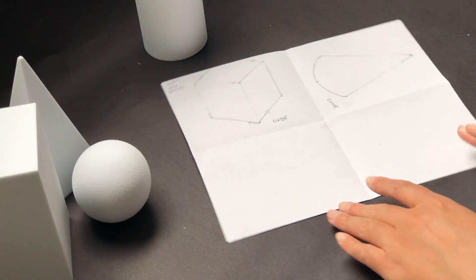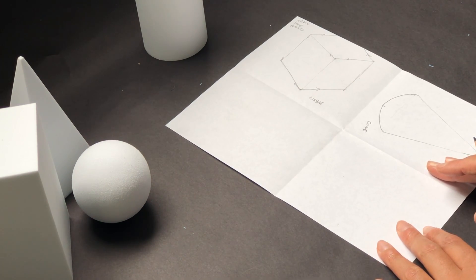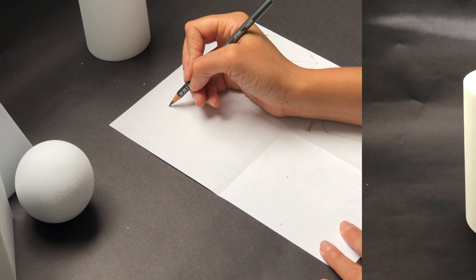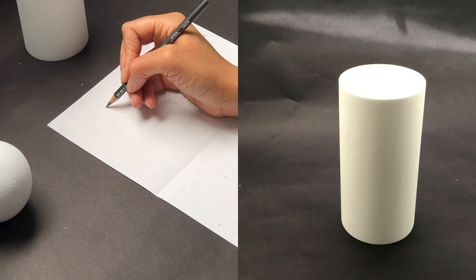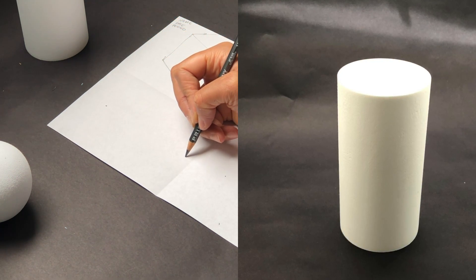Be sure to orient your paper in the vertical position. Again, this is an elongated shape and we need the vertical axis to draw it. We'll start out by marking the top edge with a dot. These guides will help us form the shape of our cylinder.